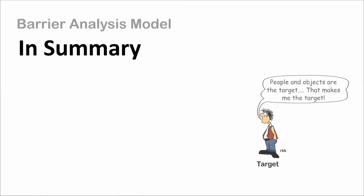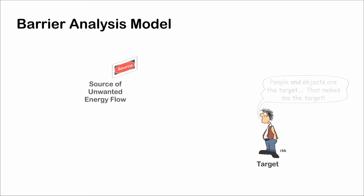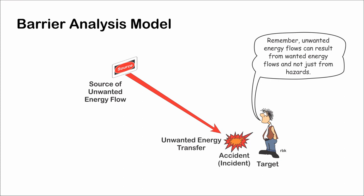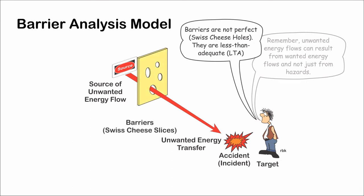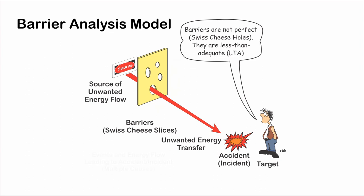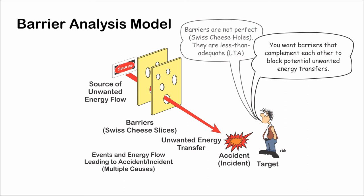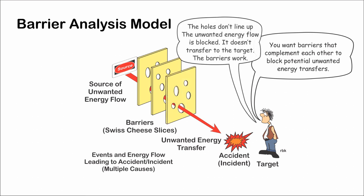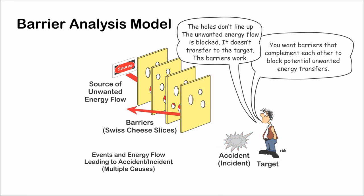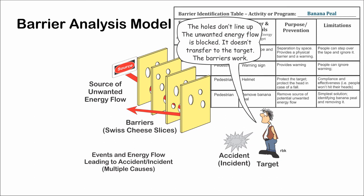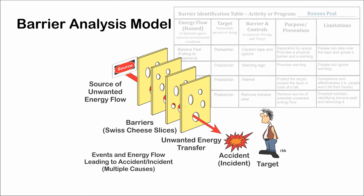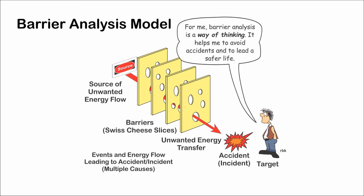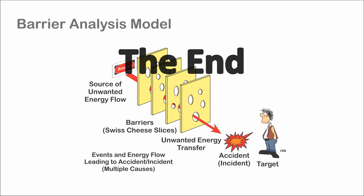Accidents can be thought of as an unwanted energy transfer from the source of the energy flow to the target. For individuals and agencies, it is a process of identifying the sources of potential unwanted energy transfers. Preventing accidents is simply the process of placing barriers — which, unfortunately, are less than adequate — between the source of the unwanted energy flow and the target, on the source of the potential unwanted energy transfer, or on protecting the target. A barrier analysis identification worksheet is provided to assist in the process. For individuals, consider the barrier analysis process as a way of thinking that helps focus on what you can do to be safer and to reduce accidents.